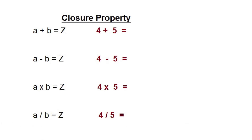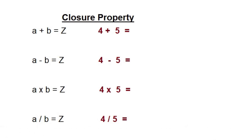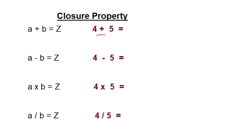I'm using Z to represent all integers. The closure property asks: after the operation — plus, minus, multiply, and divide — will my resulting answer be an integer? For addition, 4 plus 5 equals 9, which is an integer. 4 minus 5 gives negative 1, also a valid integer. 4 times 5 is 20, also a valid integer.